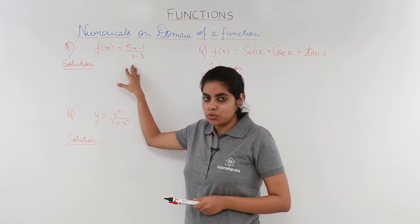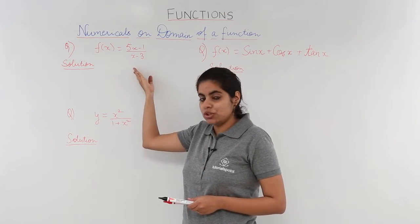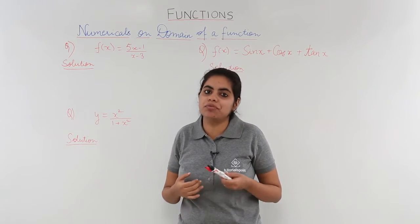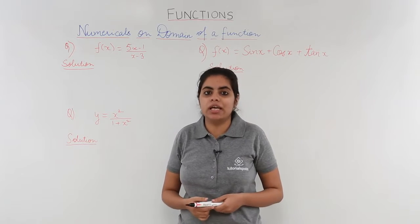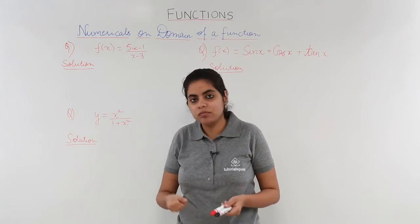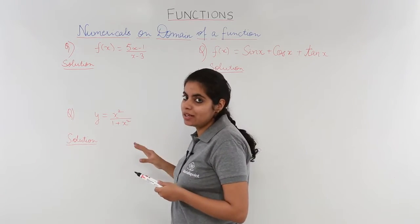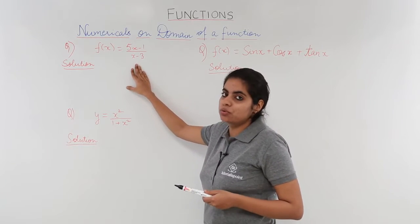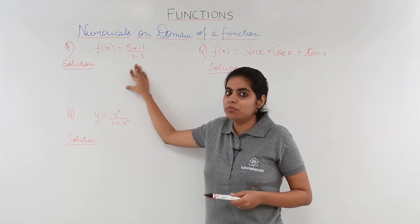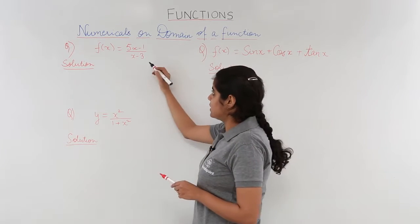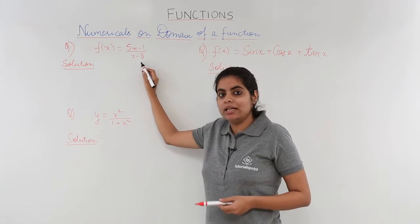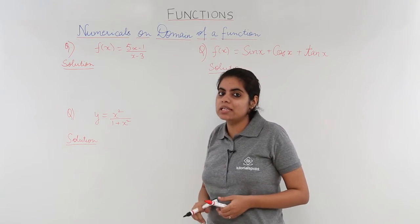Domain is the values of X you can put so that the function exists, and range is the values that Y can obtain. In these numericals we are focused on domain, so let's see what values we should be putting for X so that the function exists. For f(x) = (5x-1)/(x-3), the numerator 5x - 1 has no problems. Let's examine the denominator: x - 3.